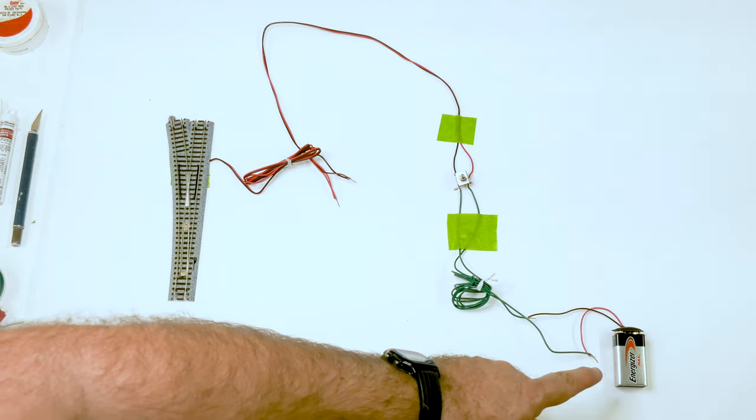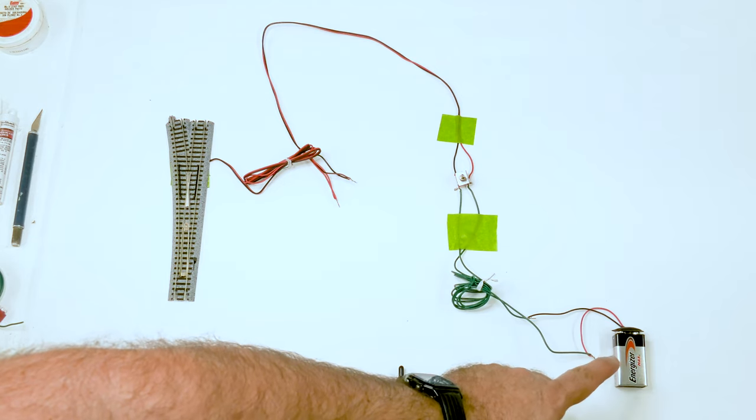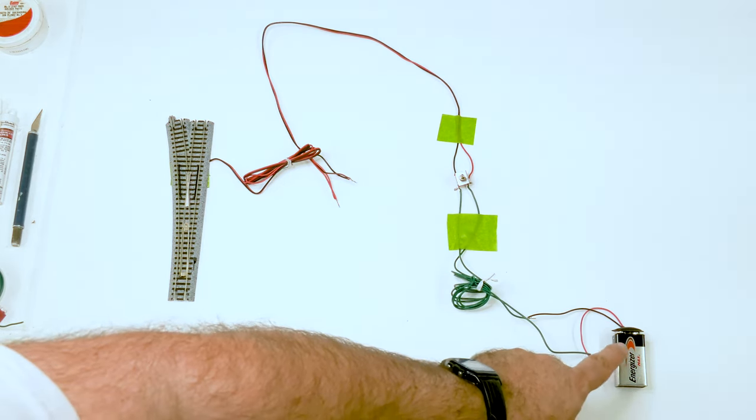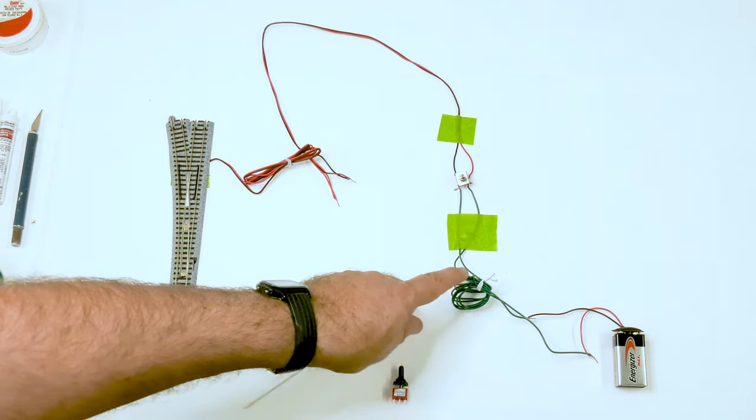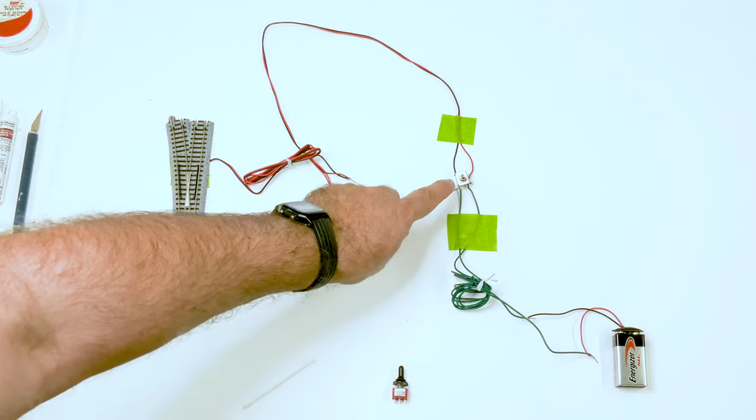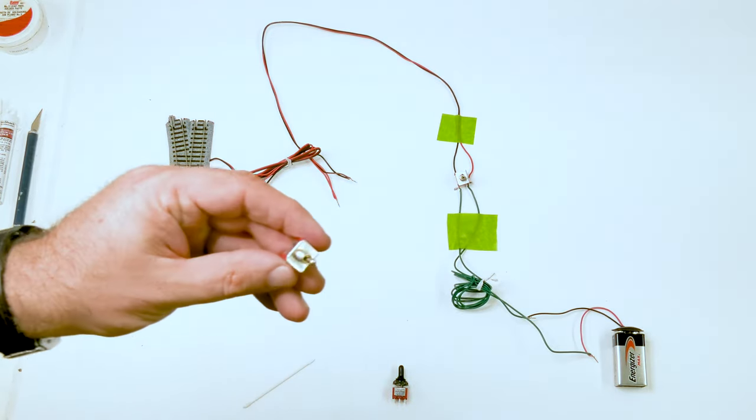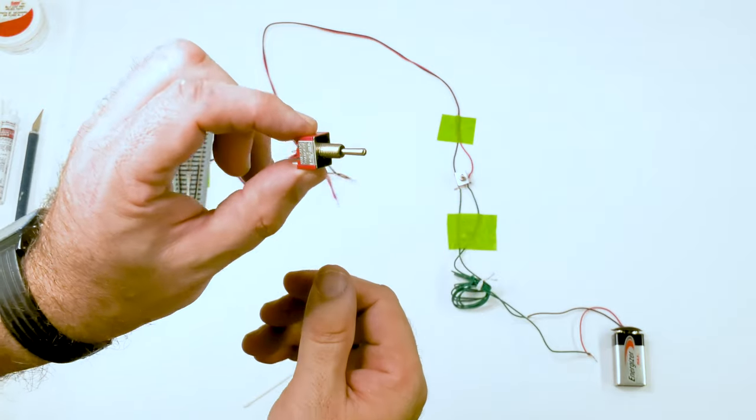It will work with a 9-volt battery. It will come from the battery or your DC power pack. You want the fixed DC from your power pack. It'll go through the switch. This is a double position, double throw momentary.